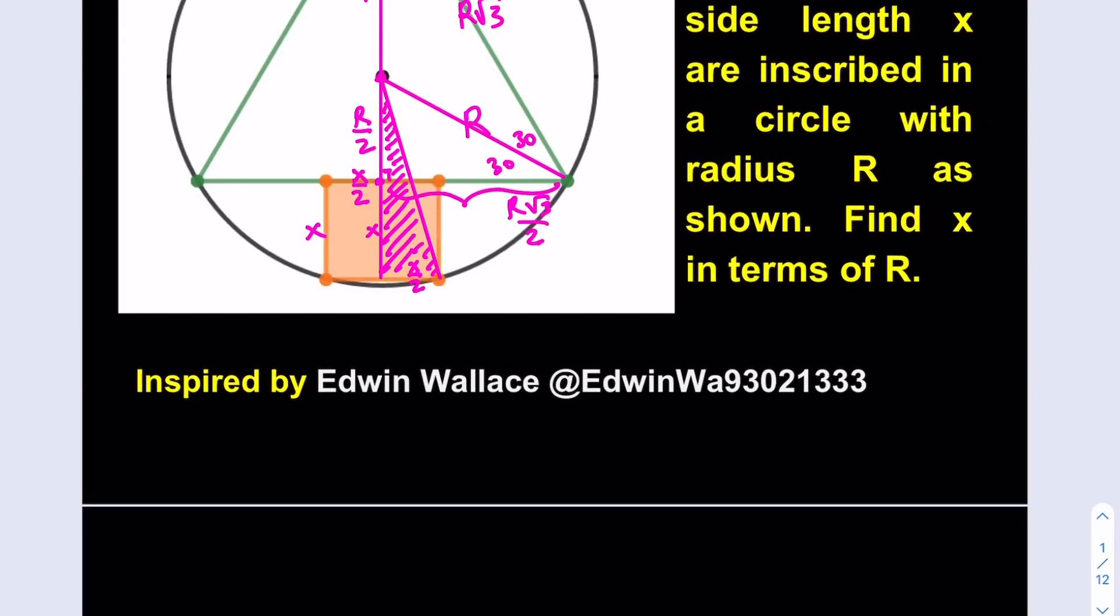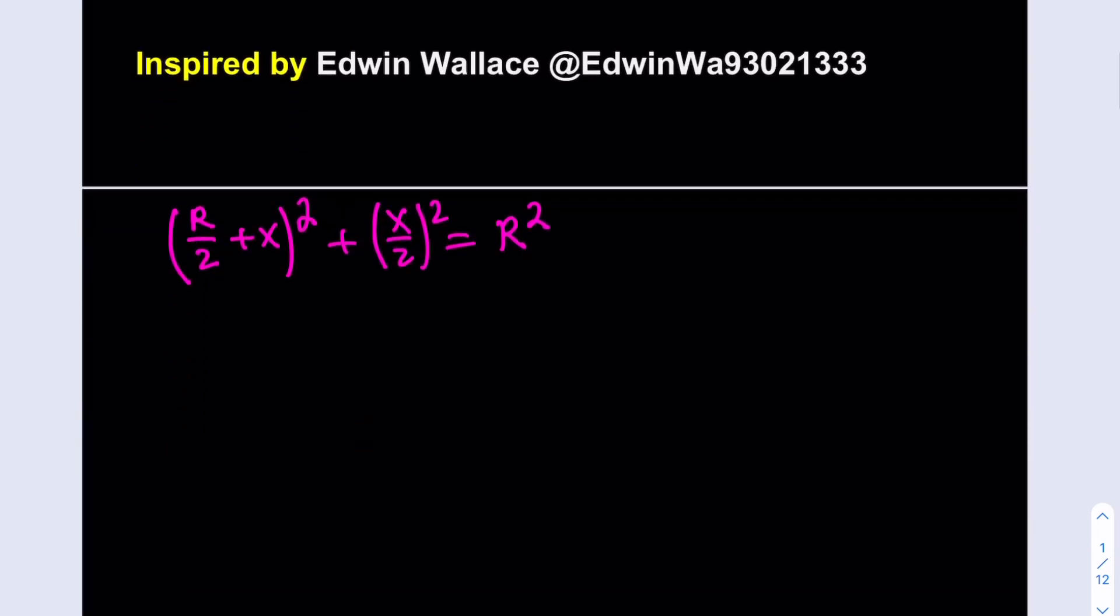The height of this triangle is r over 2 plus x, that's squared, plus x over 2 squared is equal to the hypotenuse which is the radius r. So we get this relationship and our goal is to find x in terms of r. Let's see where we can go from here.